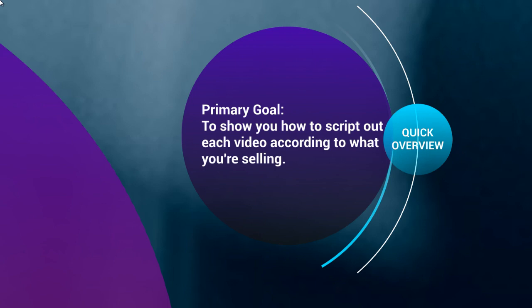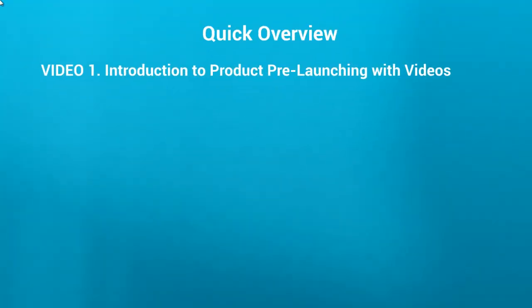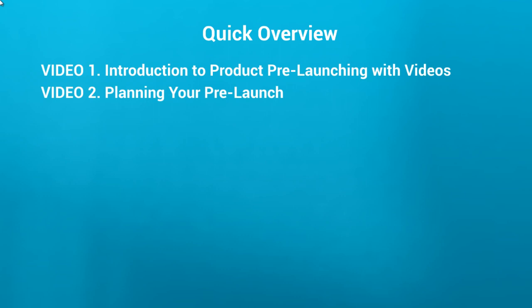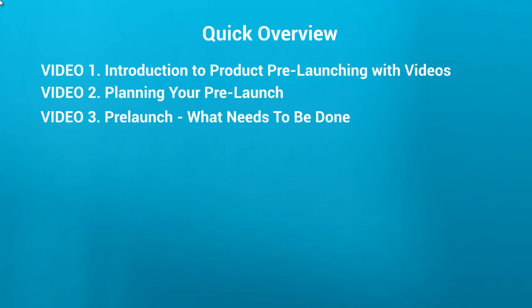Before we get started, here's a quick overview of what's inside this video course. Video number one is this video. Video number two is planning your pre-launch, to make sure we are on the same page. Video number three we're going to talk about what exactly needs to be done — I'll show you a mind map so you understand visually how things work beyond just the four videos: what to do, how to get people to opt in, where to point them. We'll map everything out for a bird's eye view.